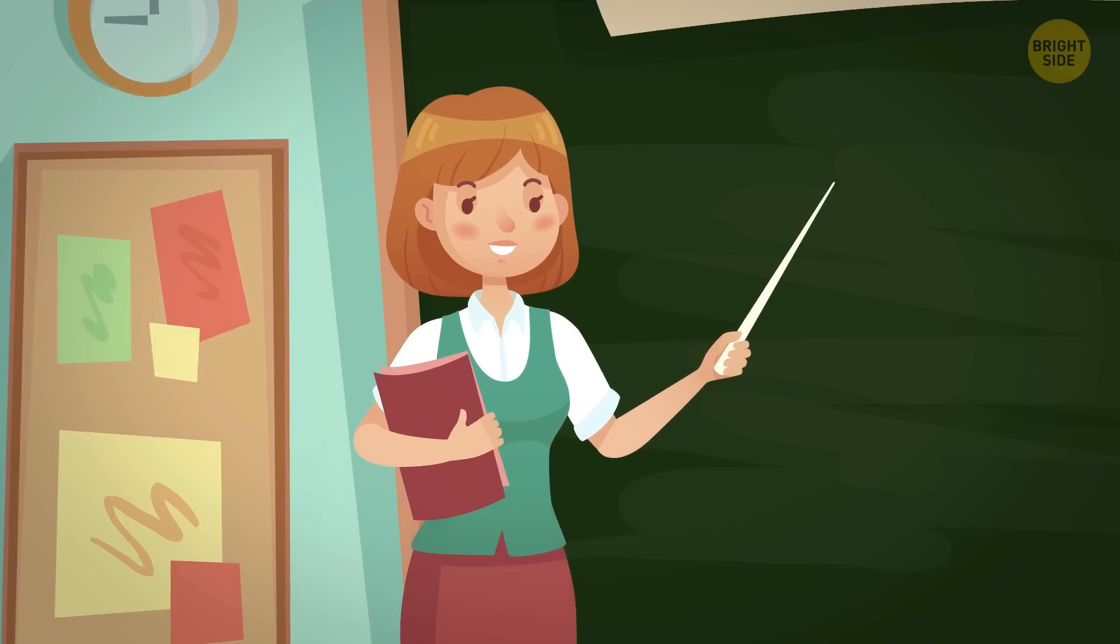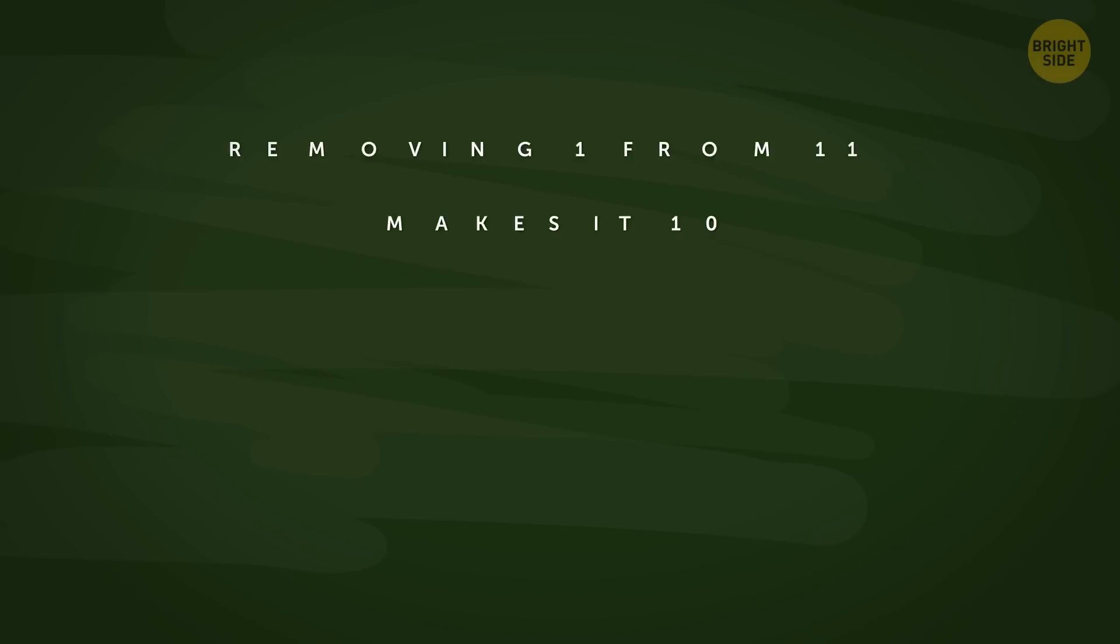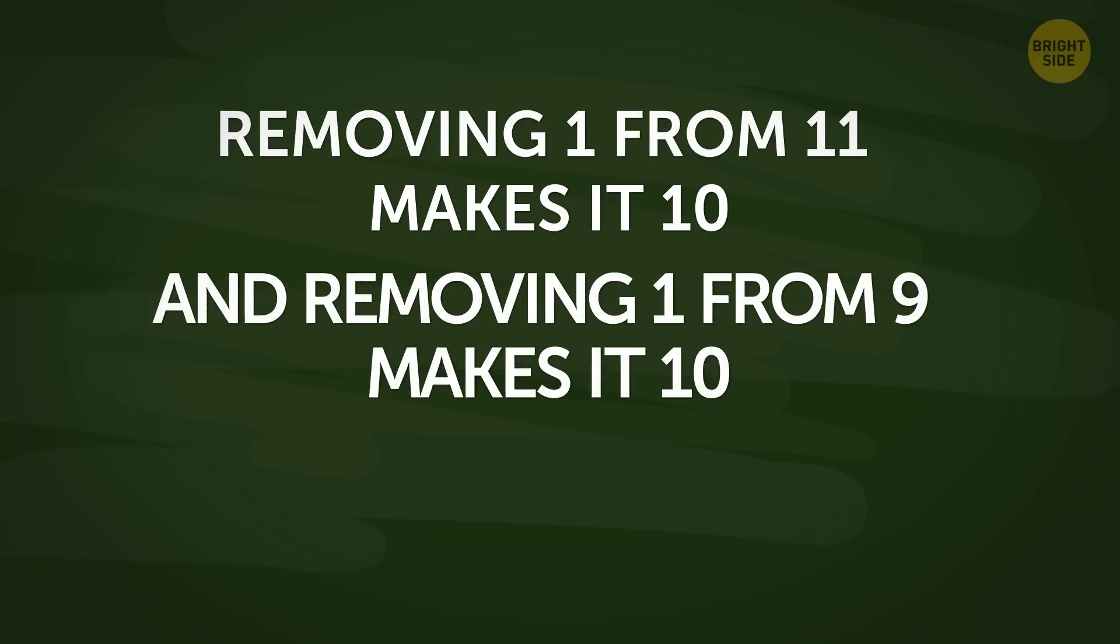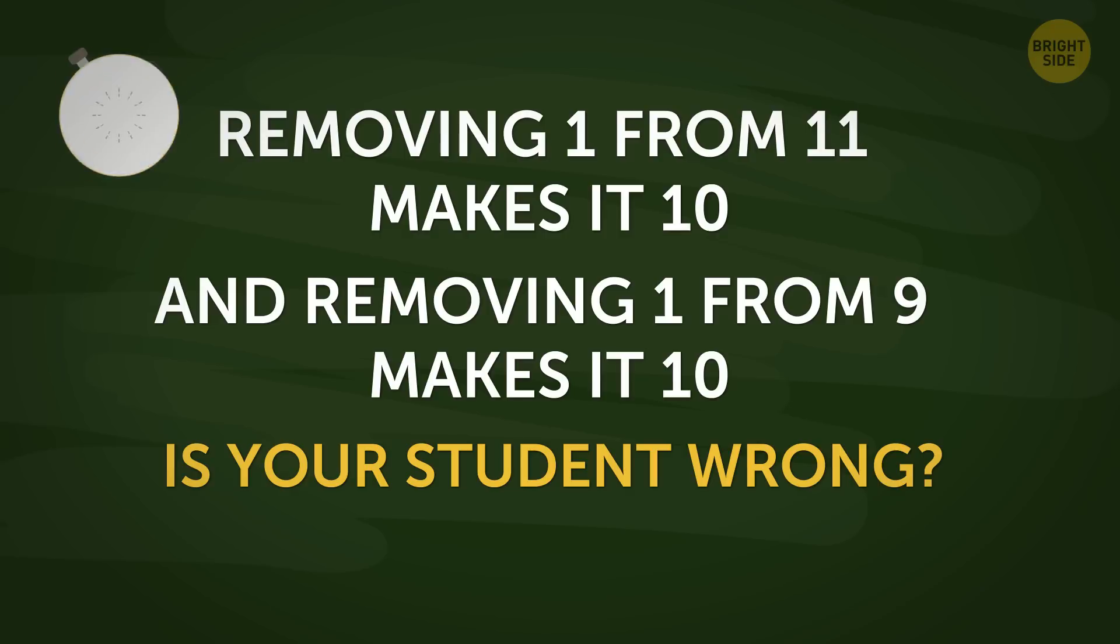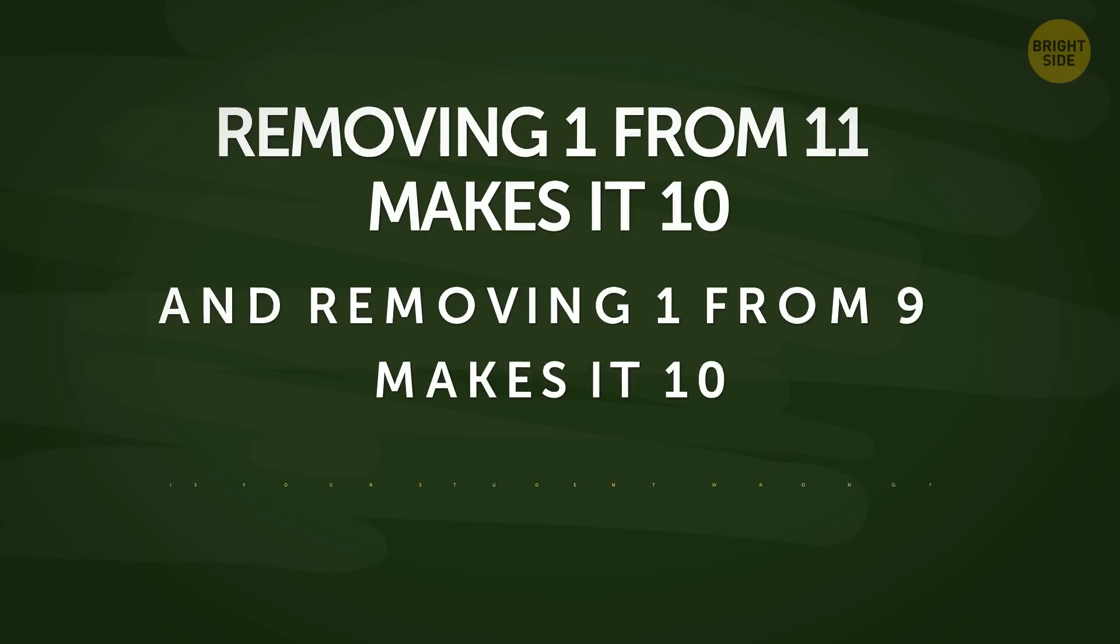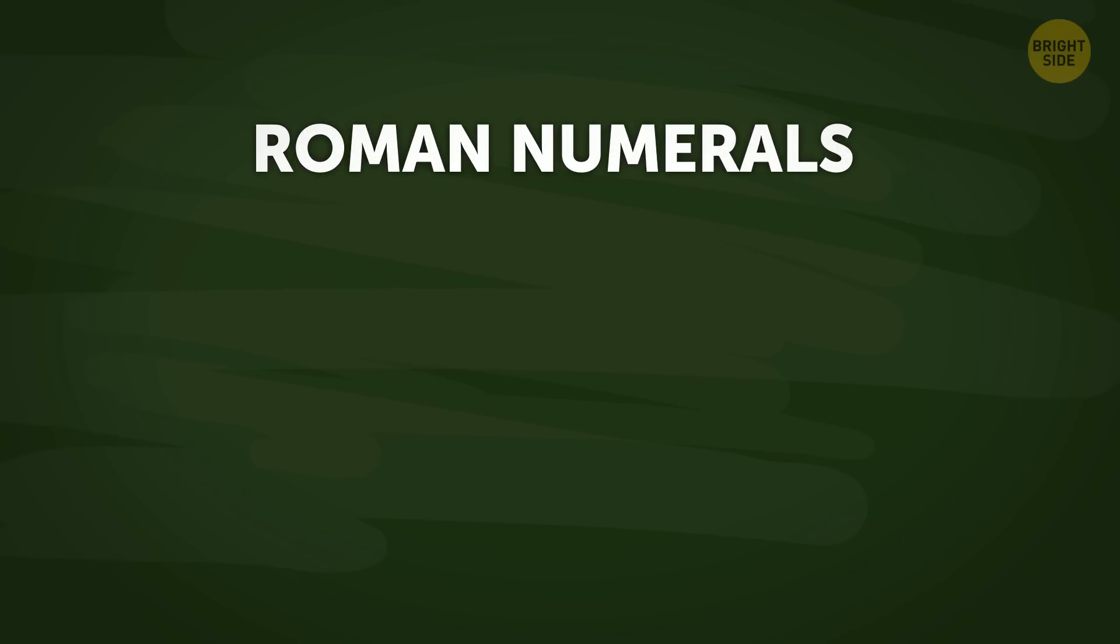Let's say you're a math teacher and your student tells you that removing one from eleven makes it ten and removing one from nine makes it ten. Is your student wrong? Not really. This answer is possible when you use Roman numerals. Nine equals IX, ten equals X, eleven equals XI.